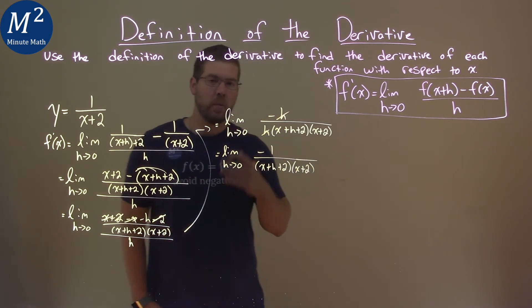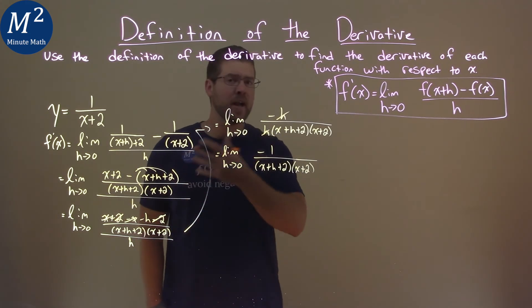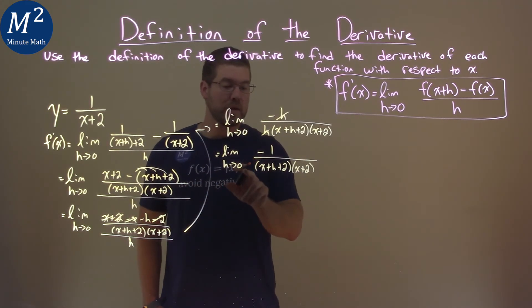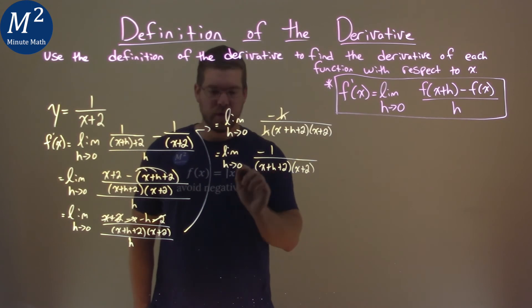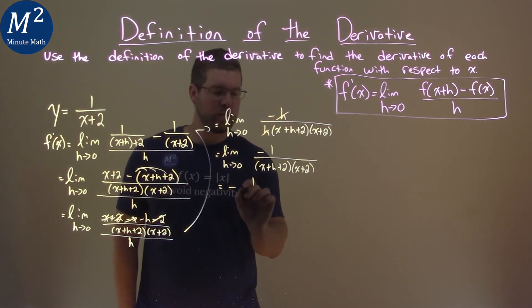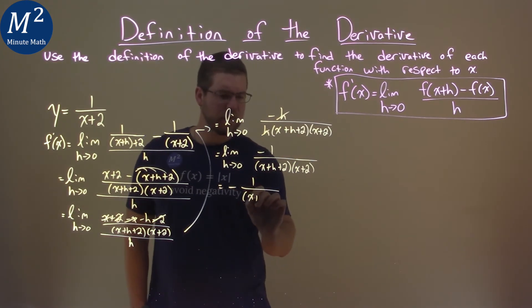It is now at this point that we can take the limit. We're not dividing by 0 if we do that. We can directly plug in 0 for h, and this is what we get. We have negative 1, and we have x plus 2, right, because the h is 0, and x plus 2.